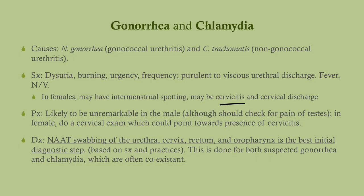For diagnosis, we use NAAT — nucleic acid amplification test. You'll get a swabbing at least of the urethra and the cervix if it's a woman. You should also get swabbings around the rectum and the oropharynx depending on their sexual practices. Most people who are sexually active do have oral sex, so the oropharynx would be useful. This is done in suspected gonorrhea or chlamydia, which are often but not always coexistent.